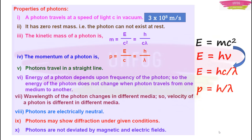The fifth property: photons travel in a straight line — rectilinear propagation, which we know from school. The sixth property: the energy of a photon depends upon its frequency. Therefore, the energy of the photon does not change when it travels from one medium to another, because E = hν — energy depends only on frequency. As long as frequency doesn't change, energy stays the same regardless of medium.